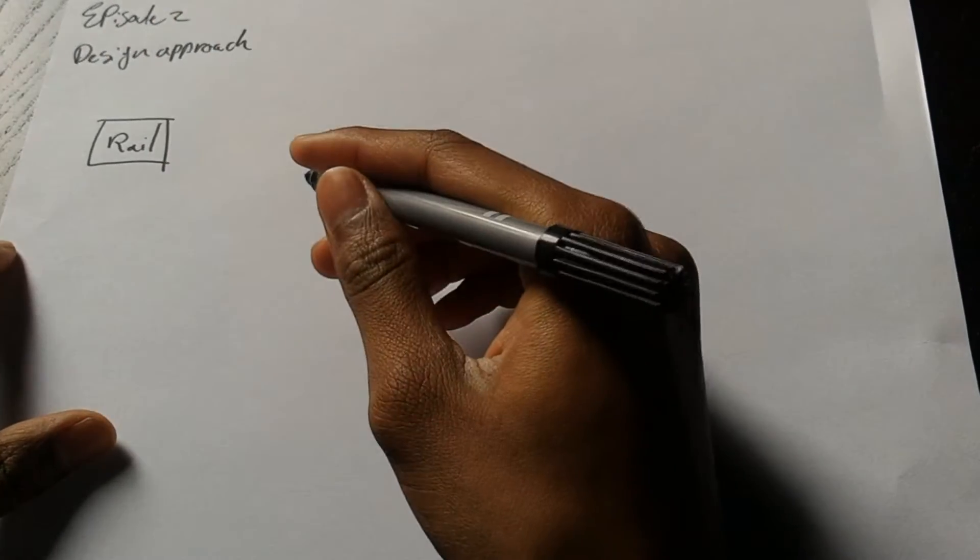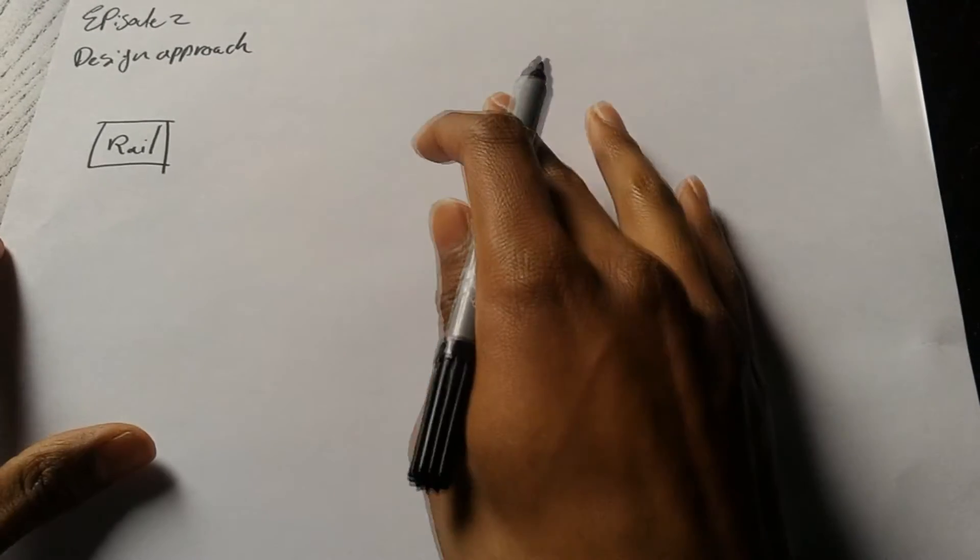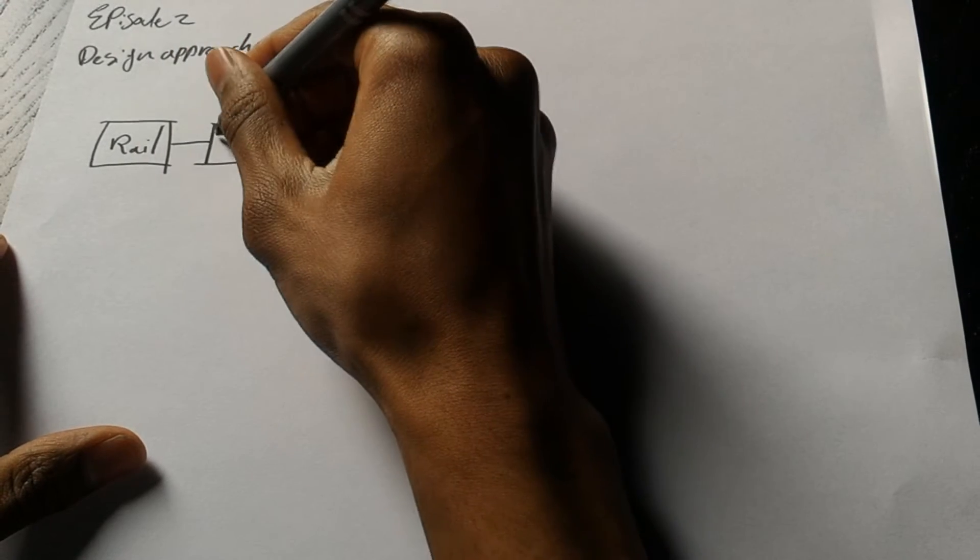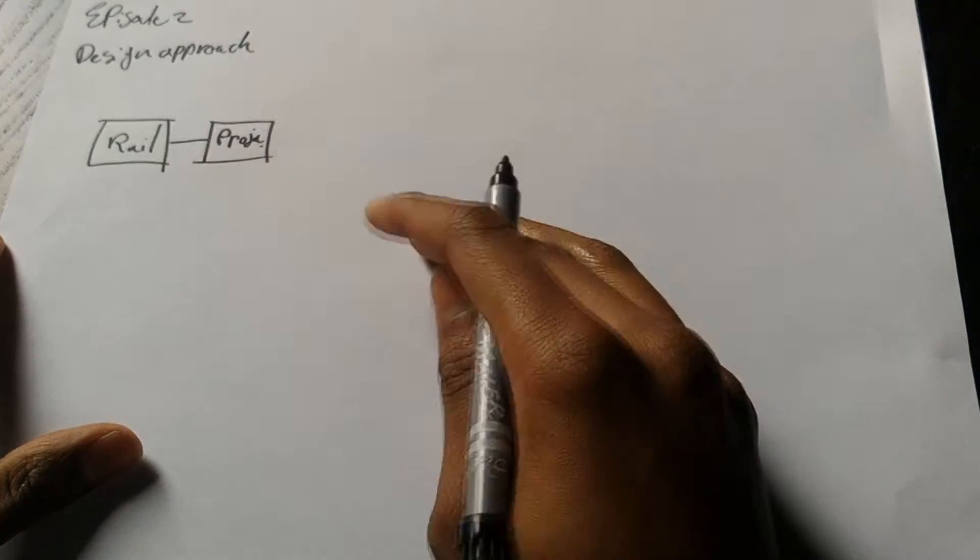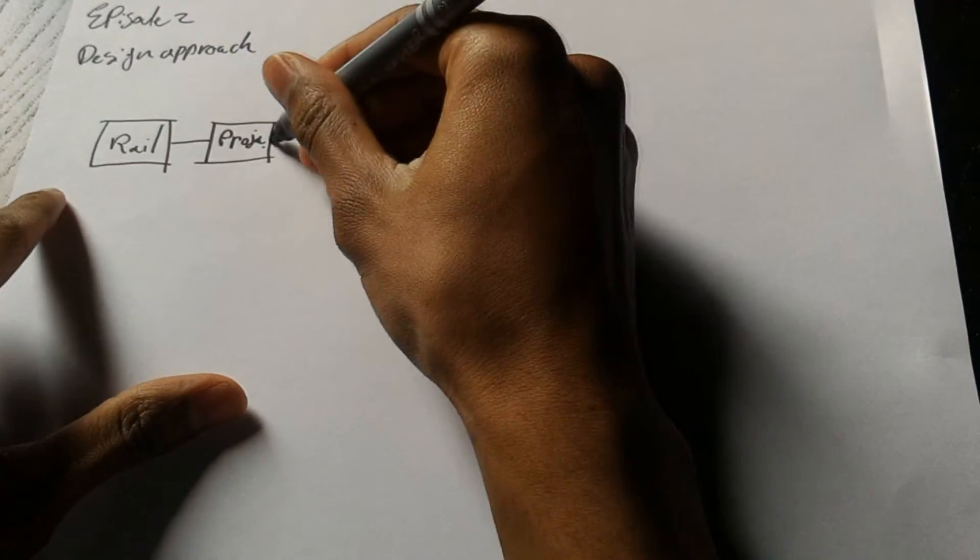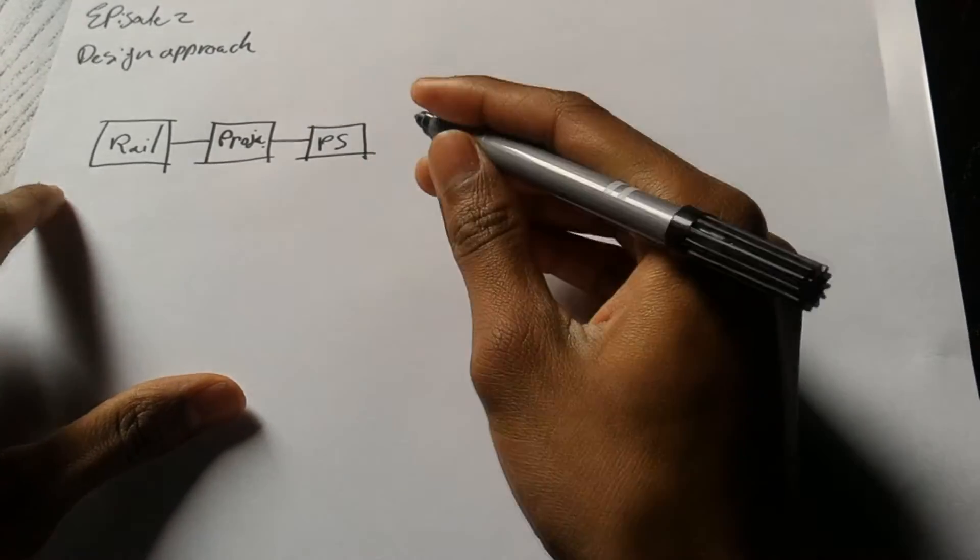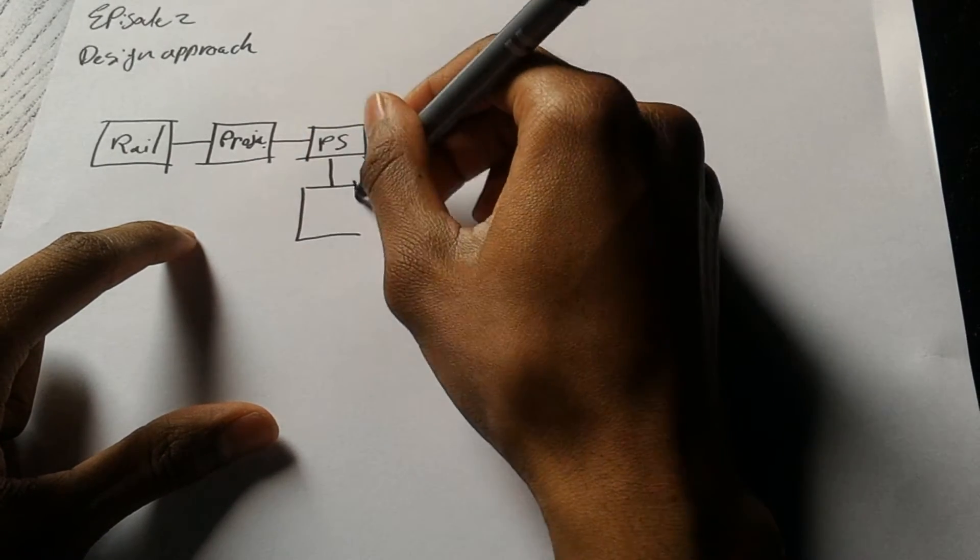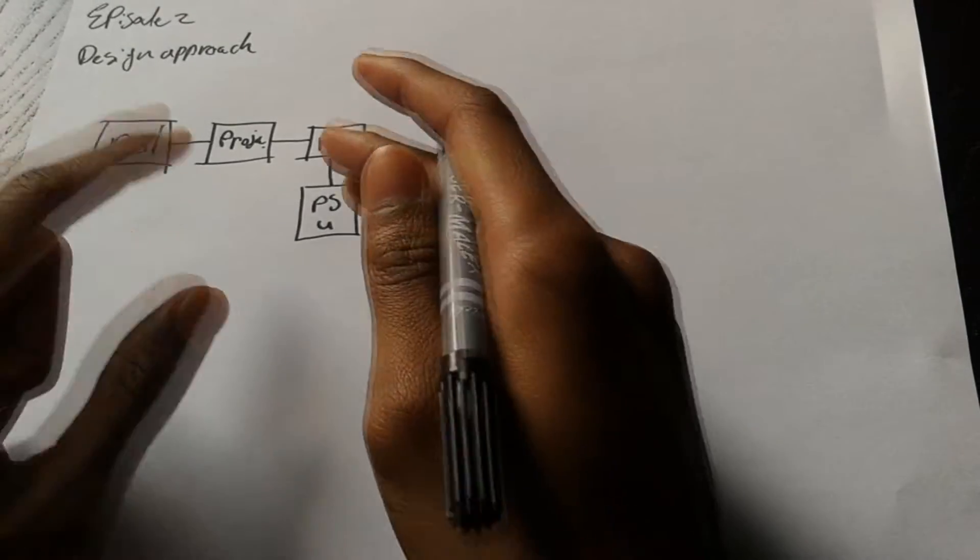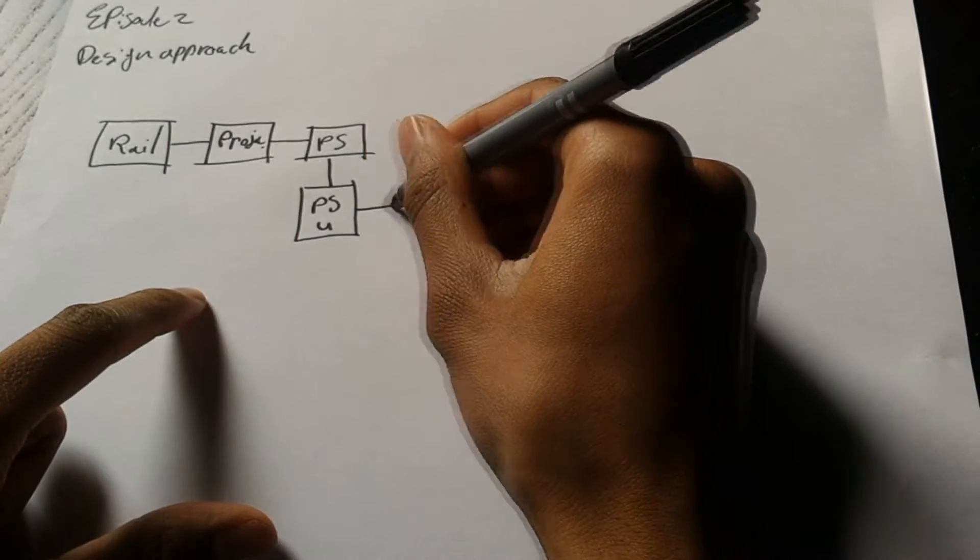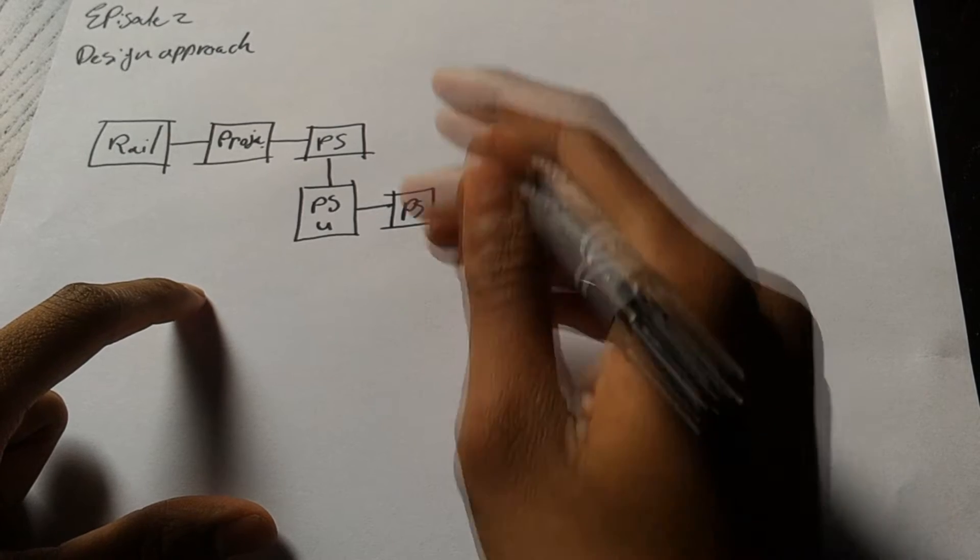Before we are going to build anything or design anything we are going to look at what a railgun requires. First of all what it needs is a rail, and of course without rail you don't have a railgun. You will also need a projectile. To accelerate the projectile you will need a power source, but that power source also has to be charged. For that we have a power supply unit which also requires a power source, for example a battery. While this is just the basics for a railgun, we want more than just the basics.